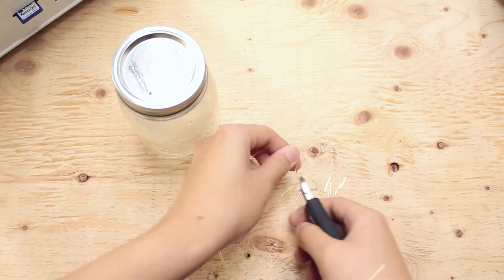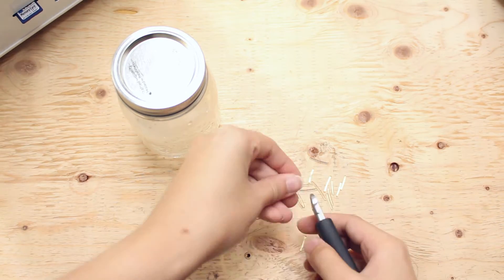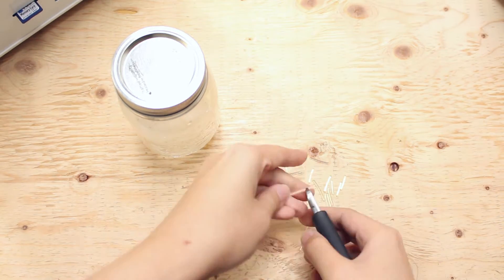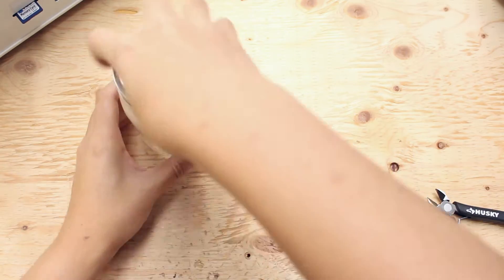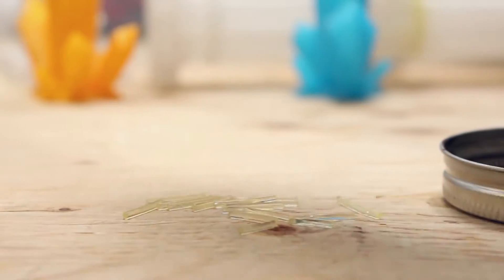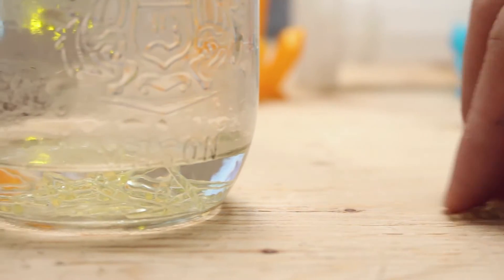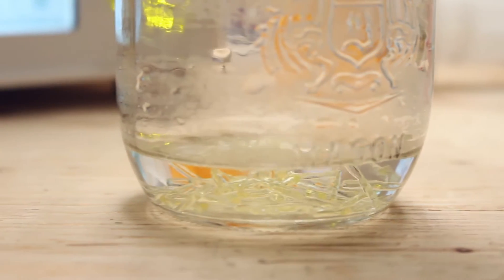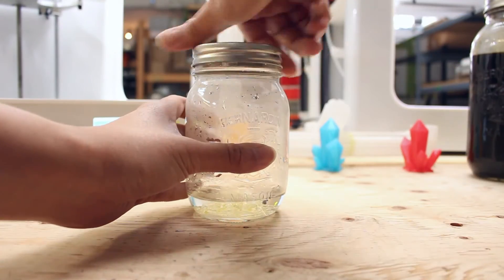Let's start to cut the PVA into smaller pieces so they can dissolve faster. I'm just going to throw in all the PVA I cut. Throw the PVA into the jar of hot water and then swirl it around until it completely dissolves.